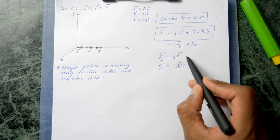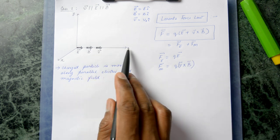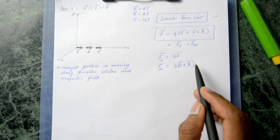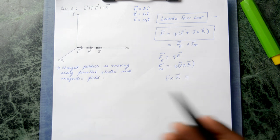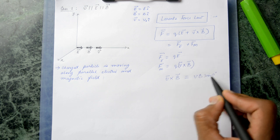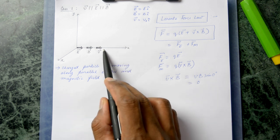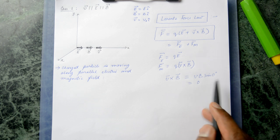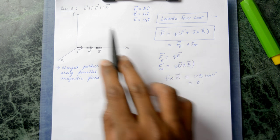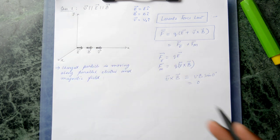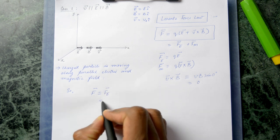The electric field will induce a force in the direction of the velocity, so the particle will start accelerating. The magnetic field has a cross product between velocity and the magnetic field, but since velocity and the magnetic field are in the same direction, V×B sin(0°) = 0. So the magnetic force is zero in this case, and the Lorentz force reduces to only QE.